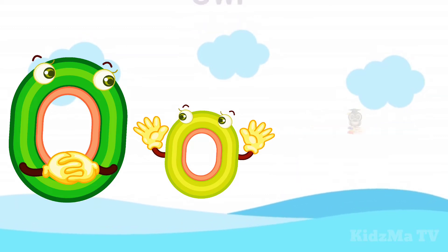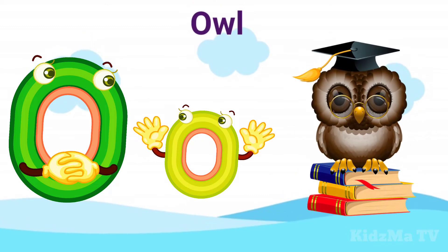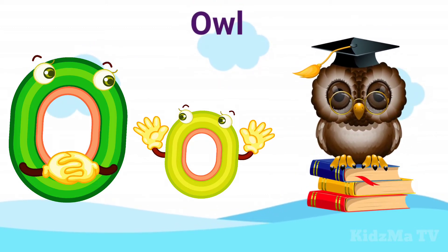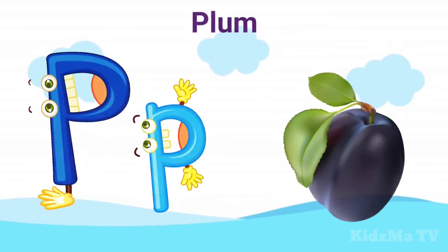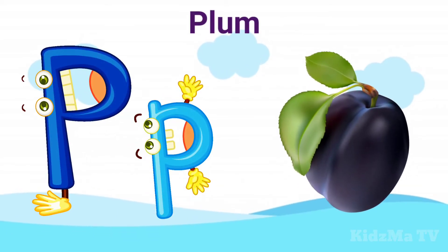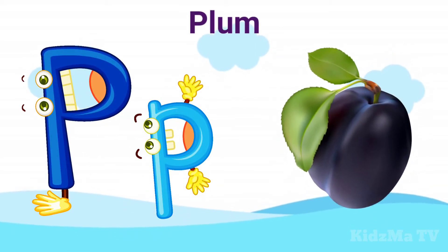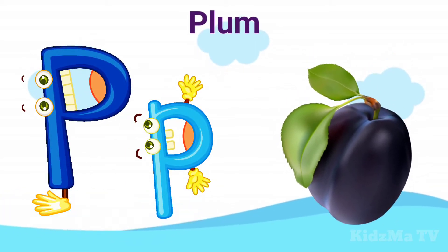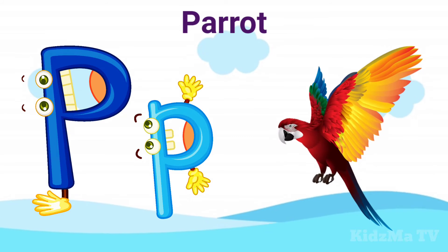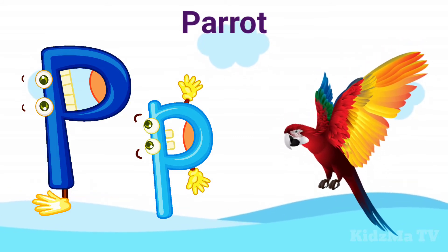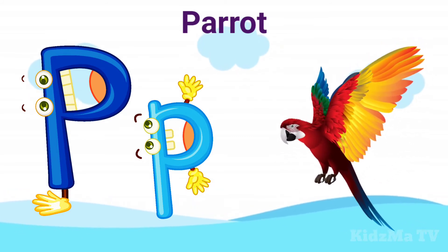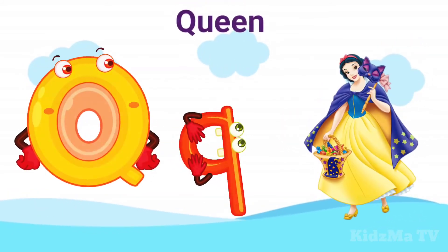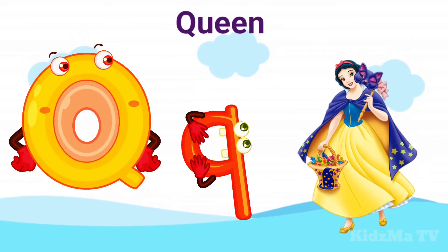O is for Owl. P is for Plum. P is for Parrot. Q is for Queen.